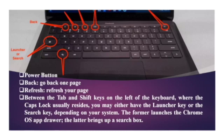Between the Tab and Shift keys on the left side of the keyboard, where the Caps Lock usually resides, you may have either the Launcher key or the Search key, depending on your system. The Launcher key launches the Chrome Operating System app drawer, while the Search key brings up a search box.